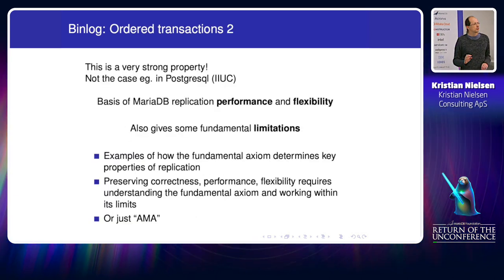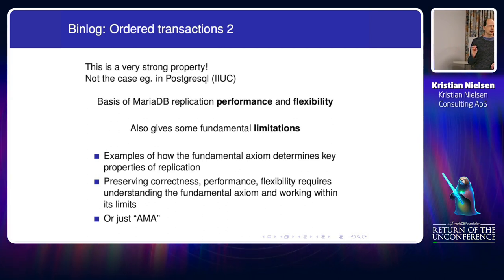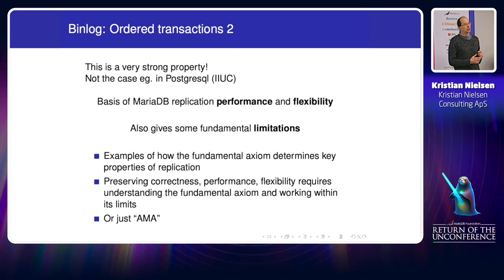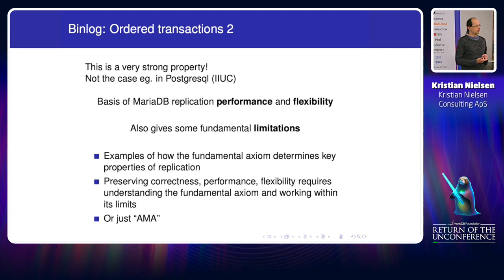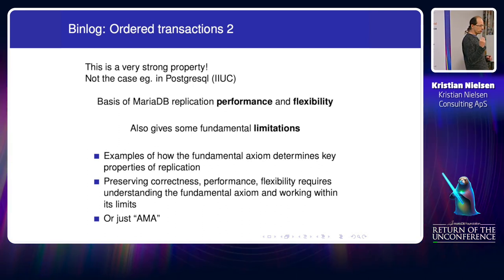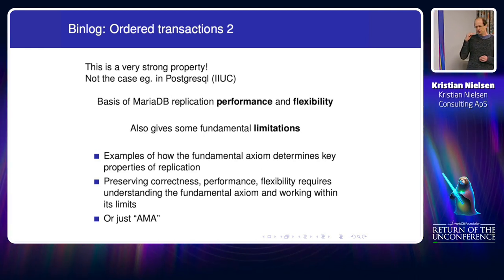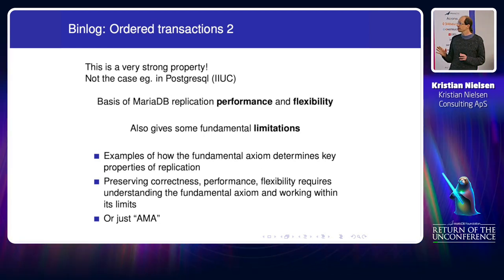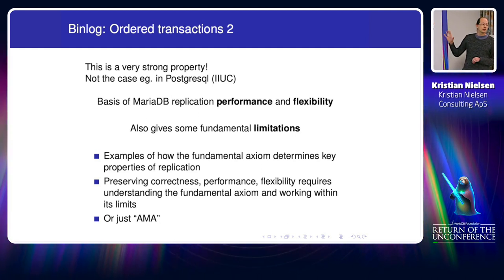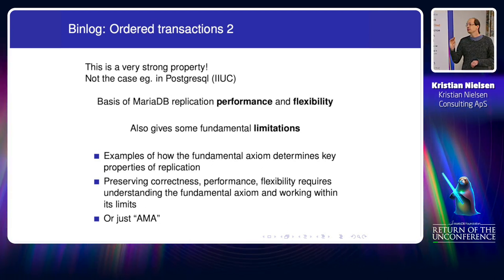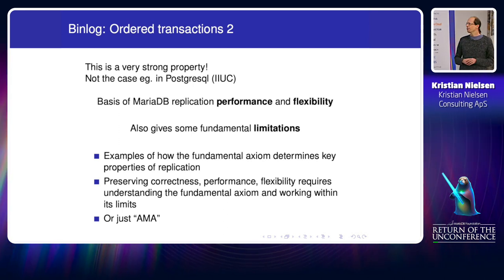That's actually a very strong property, especially for statement-based replication with SQL statements. InnoDB has very intricate locking — not just exclusive row locks, but shared row locks, gap locks, and insert intention locks. A lot of work went into making that work efficiently. They run in parallel on the master, but if we apply them in sequence on the slave, we get the same data. This is the basis of the performance of real replication that performs well, and it's also very flexible compared to many other replication solutions, but it also gives some limitations.